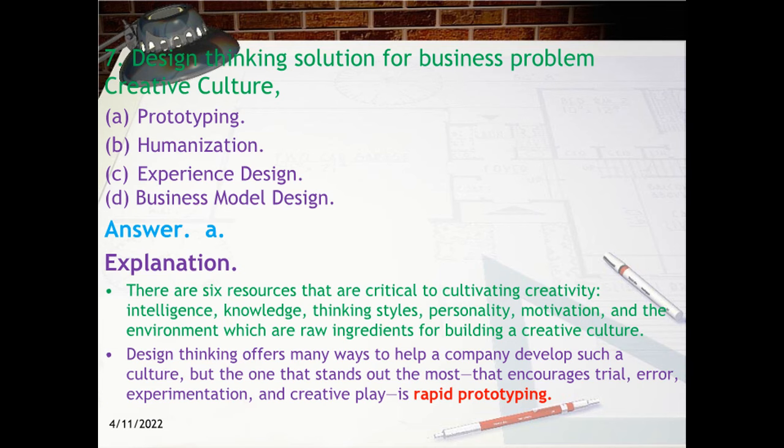Explanation: There are six resources critical to cultivating creativity: intelligence, knowledge, thinking styles, personality, motivation, and the environment — which are raw ingredients for building a creative culture. Design thinking offers many ways to help a company develop such a culture, but the one that stands out most — encouraging trial, error, experimentation, and creative play — is rapid prototyping.